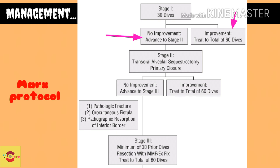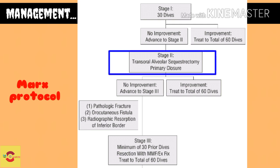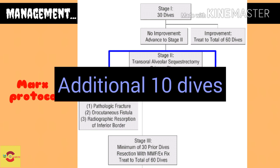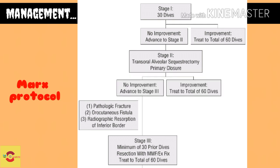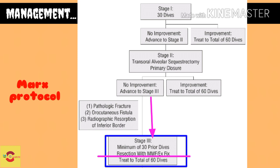Stage 1 non-responders are treated by the Stage 2 protocol. Under Stage 2, a transoral debridement and sequestrectomy, which attempts at primary mucosal closure, is done. With post-operative healing, an additional session of 10 hyperbaric oxygen exposures is given. If Stage 2 is not sufficient, we move on to Stage 3 treatment, which includes mandibular resection of the necrotic segment until bone margins that yield viable, still-bleeding bone are encountered.